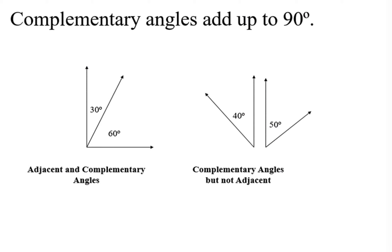Complementary angles are similar, but they add up to 90 degrees. To remember the difference between the two: supplementary means straight line, complementary means corner — that 90 degree angle. You can have adjacent and complementary angles, and you can also have complementary angles that are not adjacent.